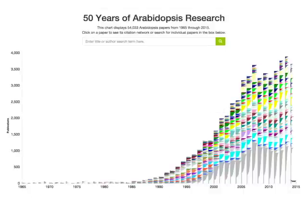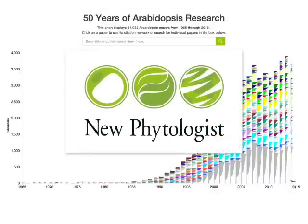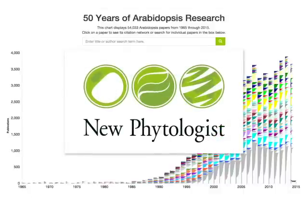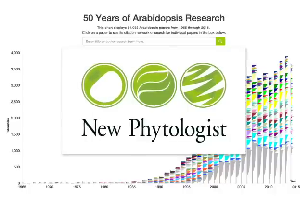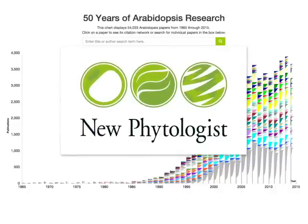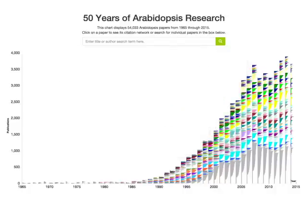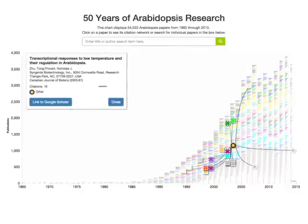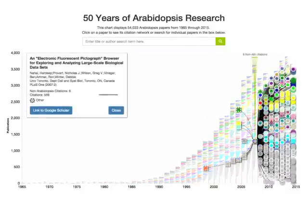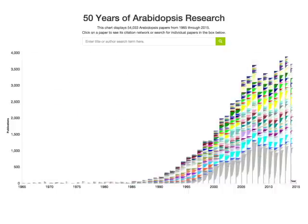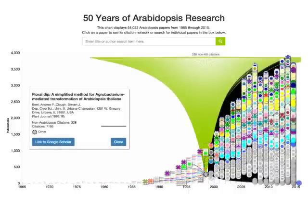As part of a review of these past 50 years for the New Phytologist, we have built an interactive explorer of the Arabidopsis literature. Some papers have been cited a few times and some many times. The most highly cited paper is the Clough and Bent 1998 floral dip method.